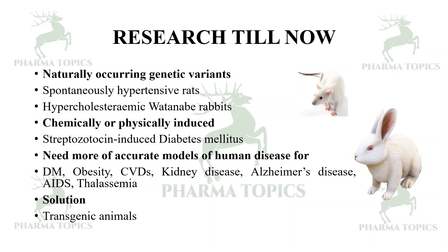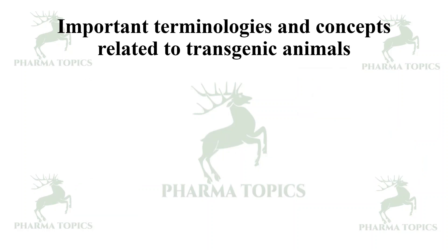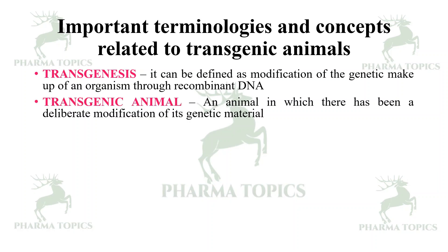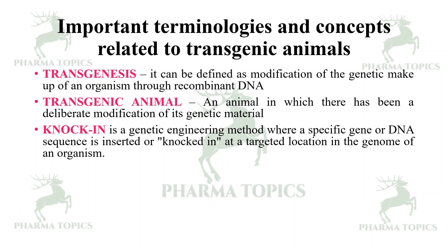Some important terminologies to know before understanding transgenic animals: Transgenesis is defined as modification of the genetic makeup of an organism through recombinant DNA. A transgenic animal is an animal in which there has been a deliberate modification of its genetic material. Knock-in is a genetic engineering method where a specific gene or DNA sequence is inserted at a targeted location in the genome of an organism.